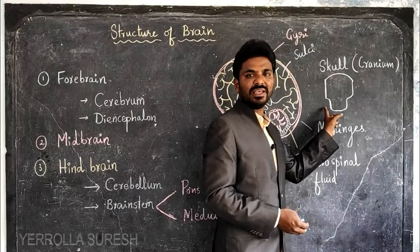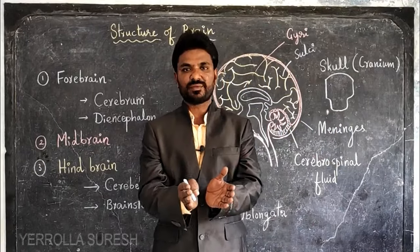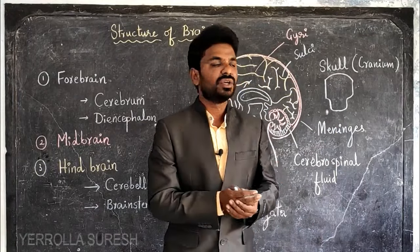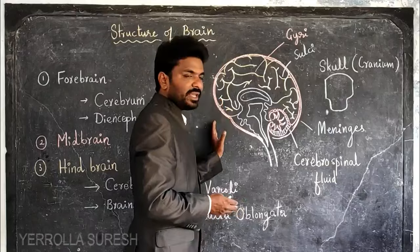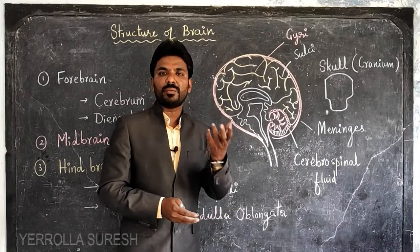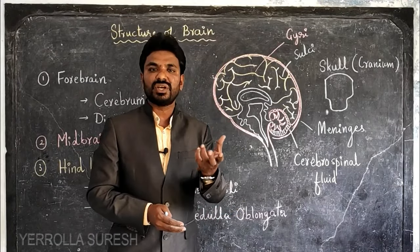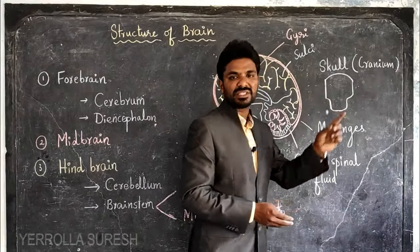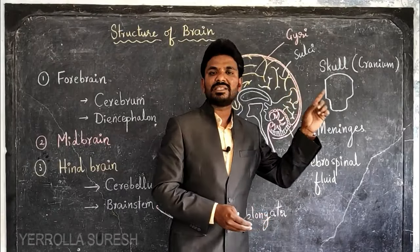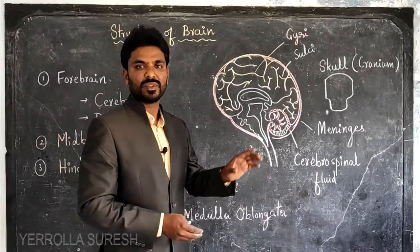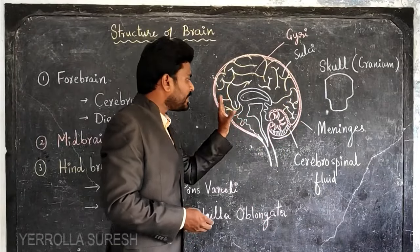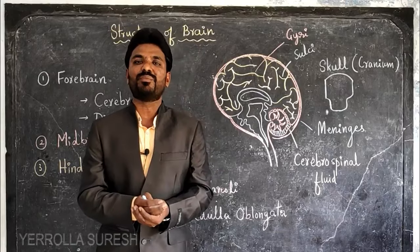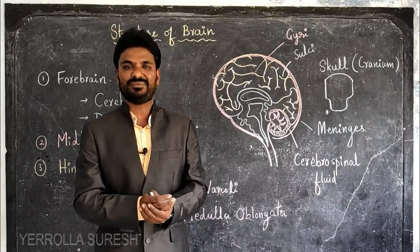The skull is a bony box-like structure in which the brain is protected. That box-like structure is the skull, which is also called the cranium. So the brain has very strong protection, as it is a very important organ.